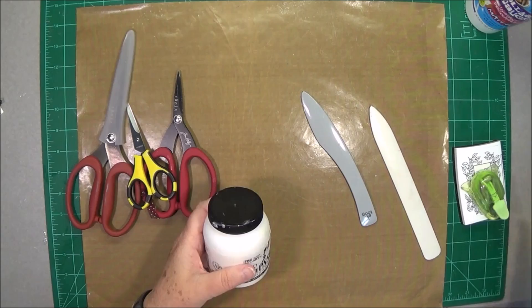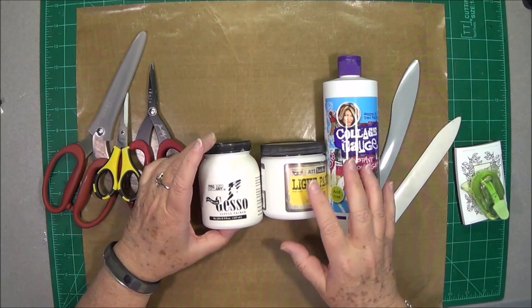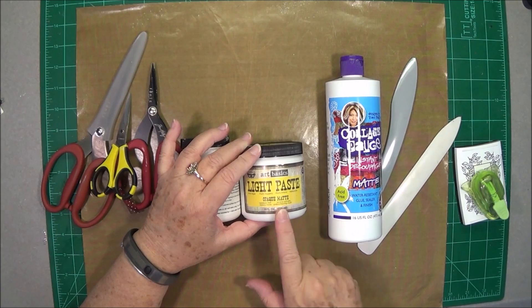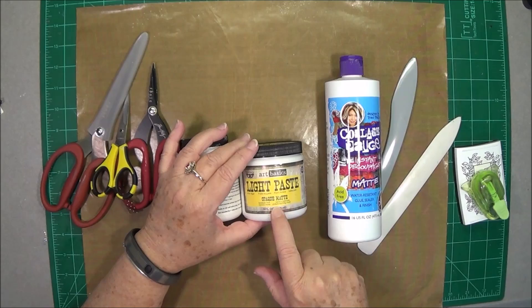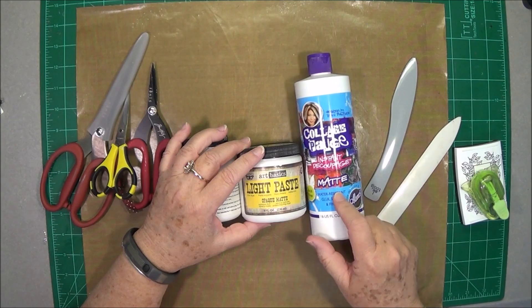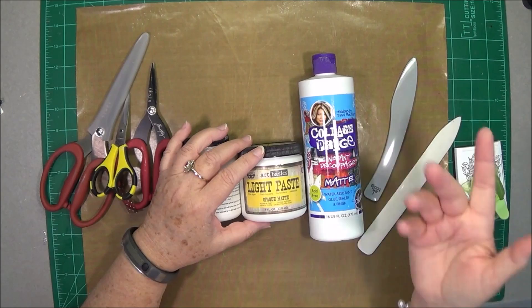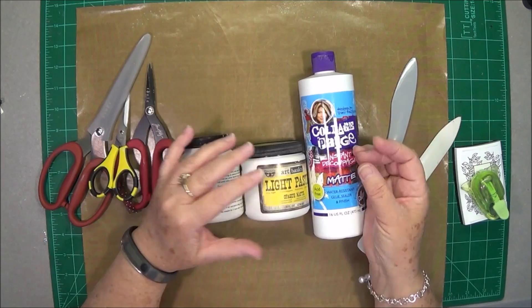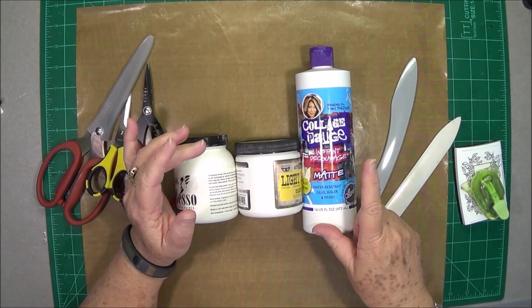Paste. These are my favorites right here. I love gesso to prep my projects. I like the light paste and the opaque matte. This is from Phenobar Art Basics. I love this to put that texture on your projects. And then the collage podge matte finish to seal everything over and make sure that nothing fades or comes up off your page or whatever. This does not leave your project sticky like Mod Podge does. I don't use a lot of Mod Podge anymore. This, I use this all the time.